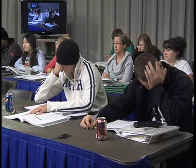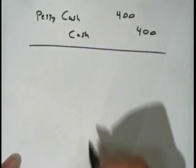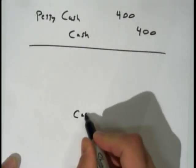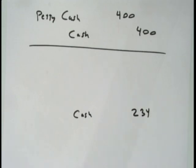We established this petty cash fund for $400. We open the box and there's $166 in cash. So how much more cash do we put in to bring it back to $400? $234. So we credit cash for $234. That's our first step.